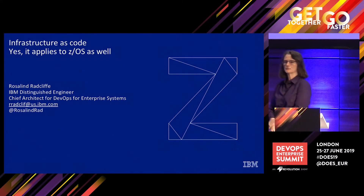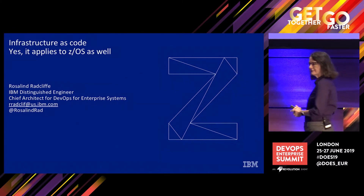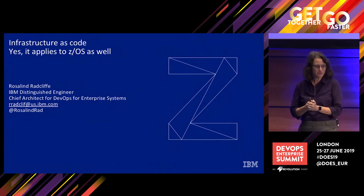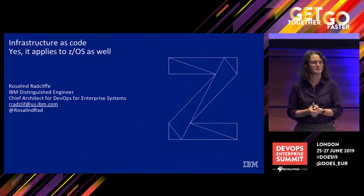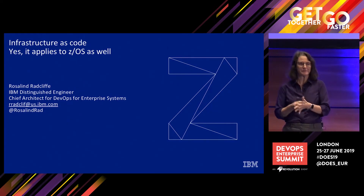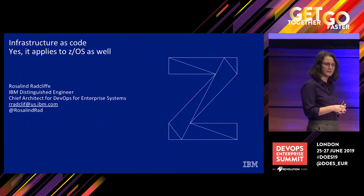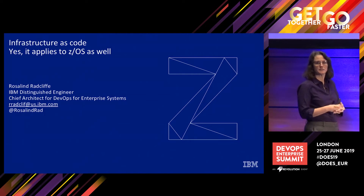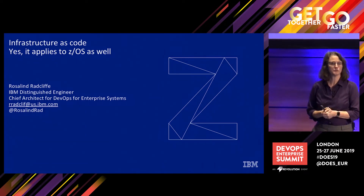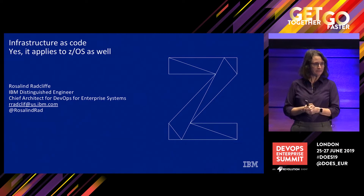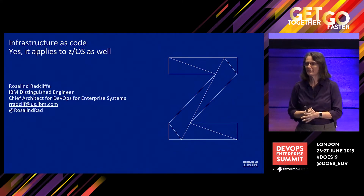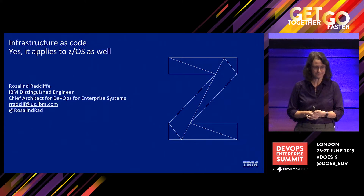Hello, my name is Rosalynn Radcliffe, and I'm an IBM Distinguished Engineer responsible for DevOps for Enterprise Systems. To give you a little bit of background about myself, I actually started at IBM about 32 years ago in ISPF development, and so I've been in and around Z my entire IBM career.